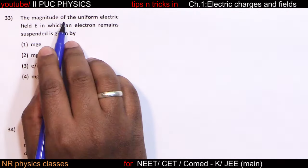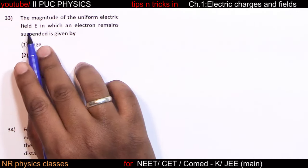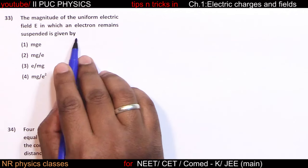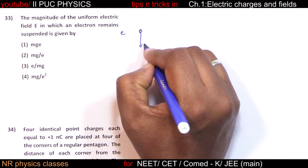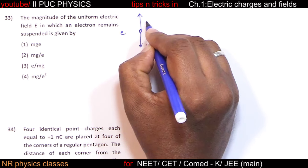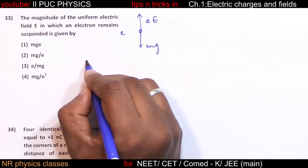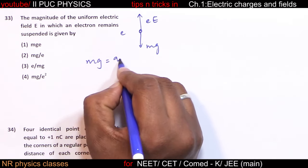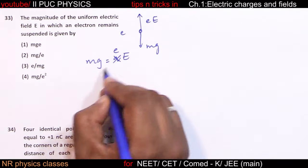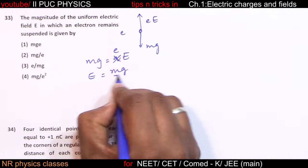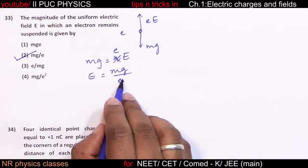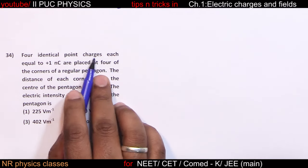The magnitude of the uniform electric field in which an electron remains suspended: weight mg downward must equal electric force QE upward. Therefore, electric field E = mg/e, where e is the charge of the electron.